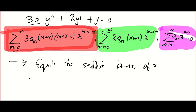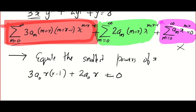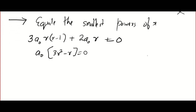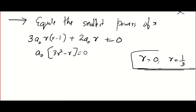From the smallest power we get one equation called the indicial equation. Putting m = 0 into the first two summations: 3a₀r(r−1) + 2a₀r = 0. Taking a₀ common gives the equation 3r² − r = 0, yielding two values: r = 0 and r = 1/3. These are distinct values, and this is the easiest case in Frobenius. There are many cases in Frobenius — I will do only this one type where the roots are distinct.